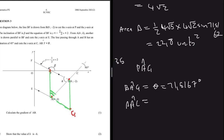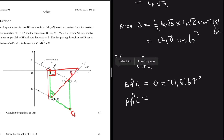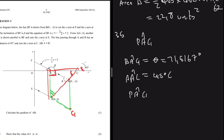For angle PAC: looking at triangle PAC, angle CPA is 90° and angle PCA is 45° (vertically opposite to the known 45° angle). Since angles in a triangle sum to 180°, angle PAC equals 45°. Therefore angle PAG equals 45° plus 71.5167°, giving 116.5167°.